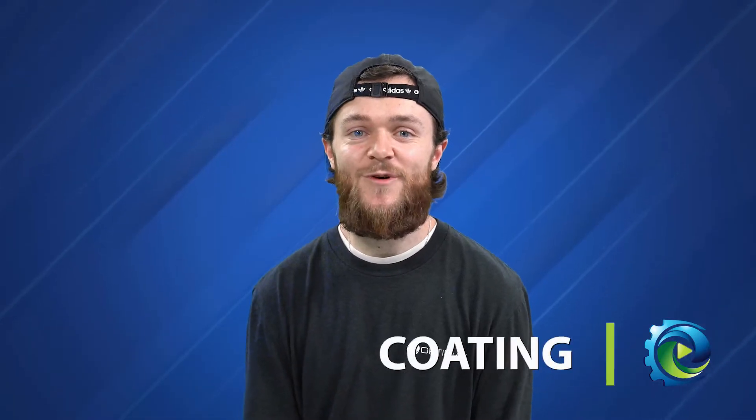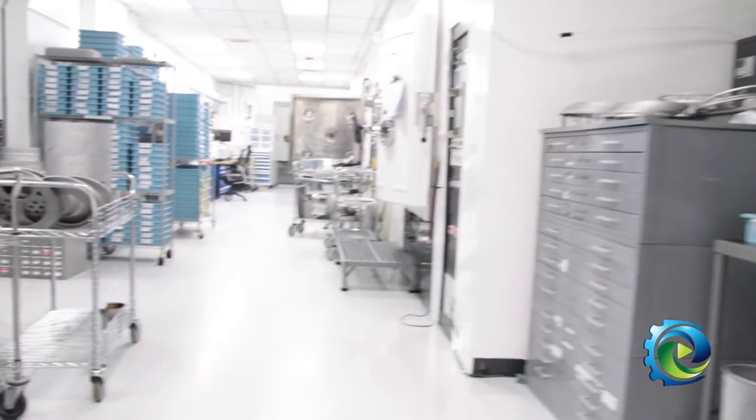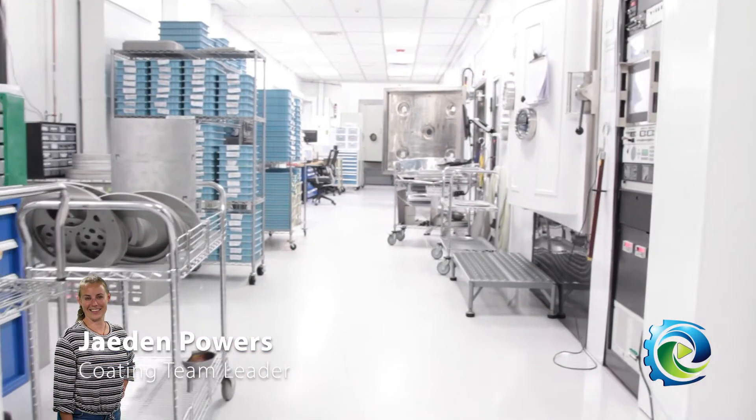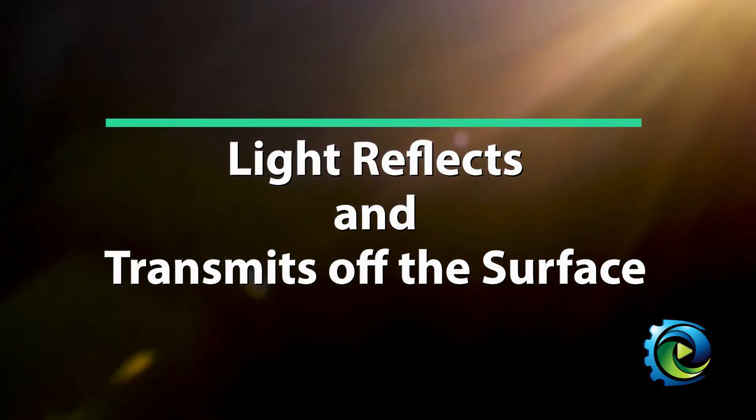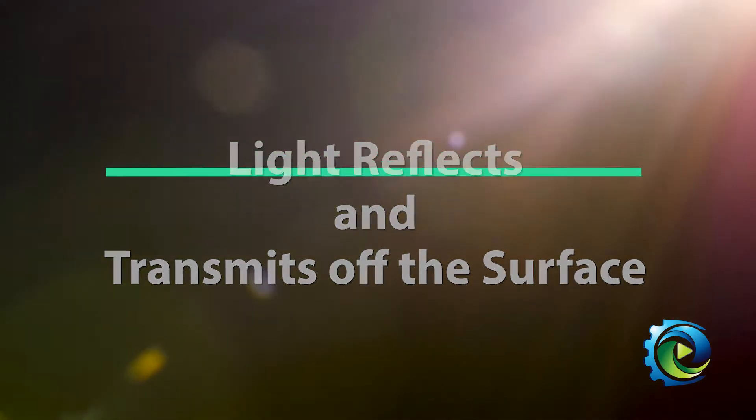Next, we'll connect with Jayden, who will help explain the coating process. Coatings in the optics world are a multi-layer stack of different materials applied to the surface of the optic. With that coating, you can change how light reflects and transmits off the surface, so it impacts the spectral performance.